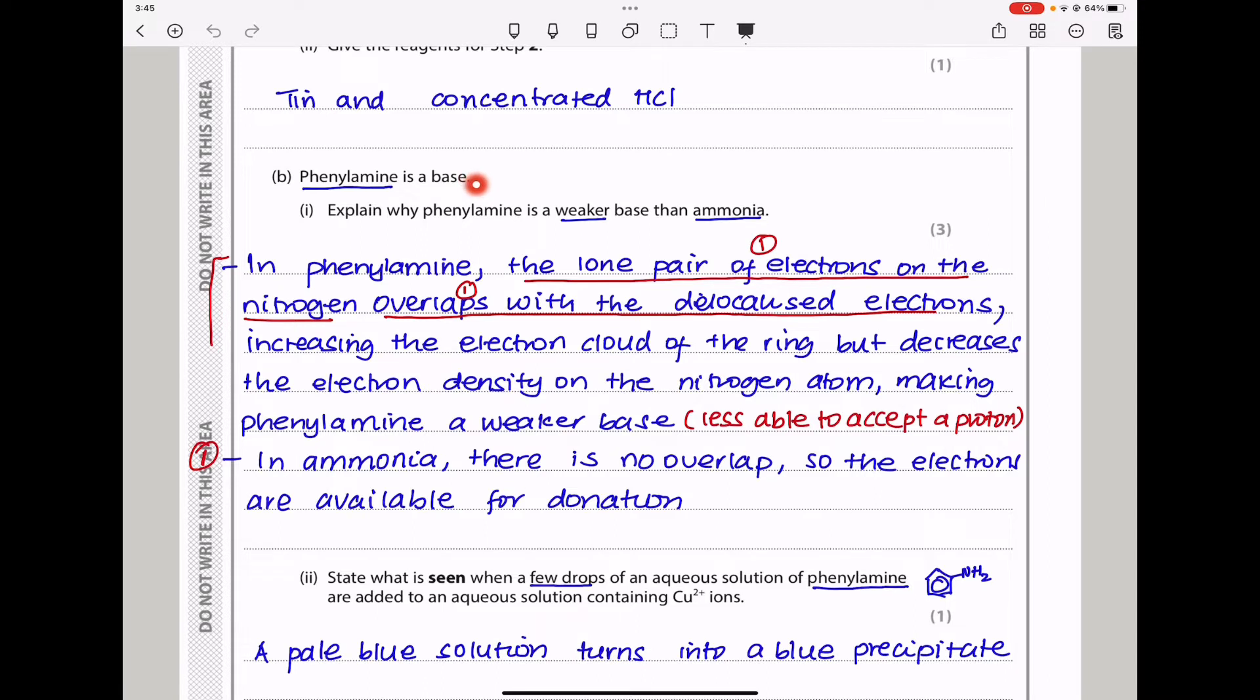Part B: Phenylamine is a base. Explain why phenylamine is a weaker base than ammonia. In phenylamine, there is a lone pair of electrons on nitrogen, but this is incorporated into the ring and therefore will not be quite available to be donated to electrophiles. In ammonia, there is a lone pair available that's easily donated for reaction. So ammonia is a stronger base than phenylamine. In phenylamine, the lone pair on nitrogen overlaps with the delocalized electrons in the ring, increasing the electron cloud of the ring but decreasing electron density on nitrogen, making phenylamine a weaker base or less able to accept protons. In ammonia, there is no overlap, so electrons are available for donation.